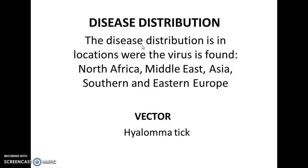Regarding distribution, the first thing to mention is the concept of a disease vector. According to Wikipedia, a disease vector is any living agent that carries and transmits infectious pathogens to another living organism. In Crimean Congo Hemorrhagic Fever, a particular type of tick known as the Hyalomma tick is responsible for carrying the virus that causes the disease.